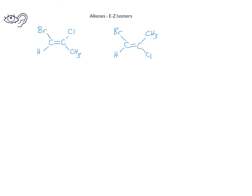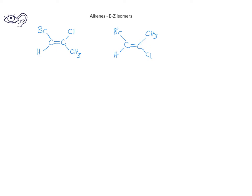What happens if we have four different groups attached to the two sp2 hybridized carbons in an alkene? In that case, we can no longer designate the isomers as cis-trans isomers. Instead, we use what's called the E/Z system for determining which isomer is which.